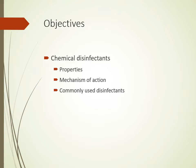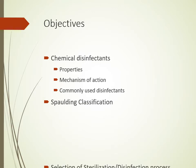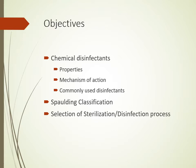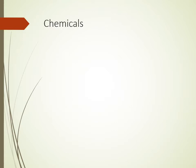In this session we will cover chemical disinfectants: their properties, mechanism of action, commonly used disinfectants, the Spaulding classification, and the selection of sterilization or disinfection processes. The chemicals considered as chemical sterilants or disinfectants include alcohol, aldehydes such as formaldehyde and glutaraldehyde, dyes, gases, phenols, halogens including chlorine and iodine, surface active agents, and metallic salts.